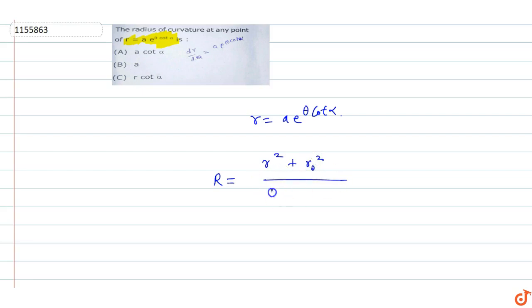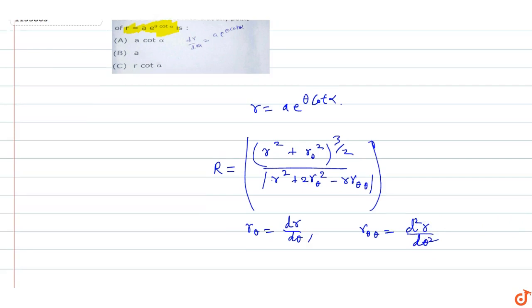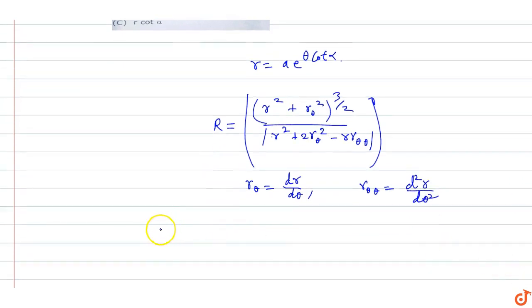The formula is upon r² plus 2·r_θ² minus r into r_θθ, raised to power 3/2 in magnitude. Here r_θ is dr/dθ, and r_θθ is d²r/dθ².